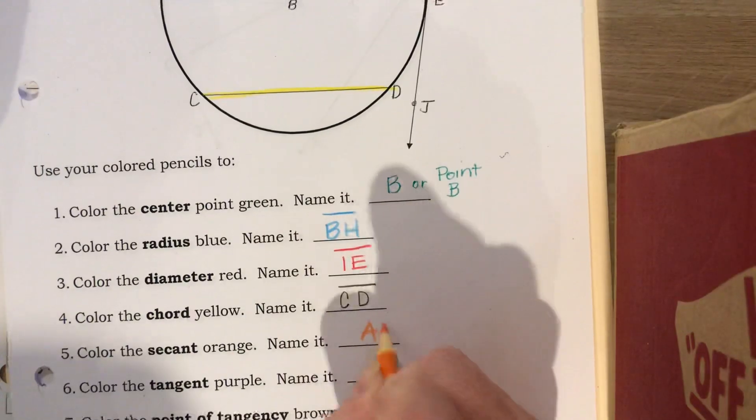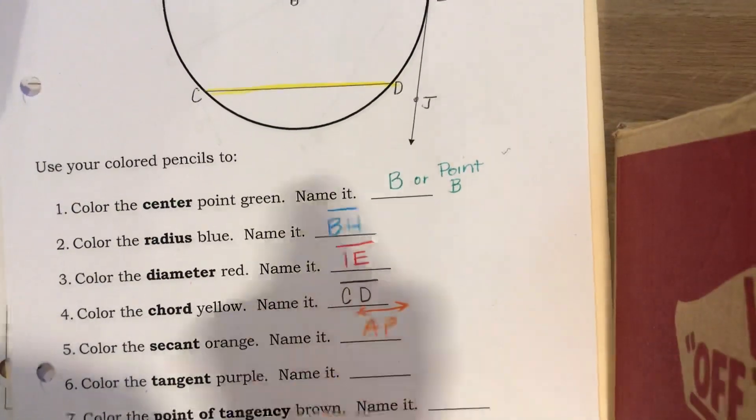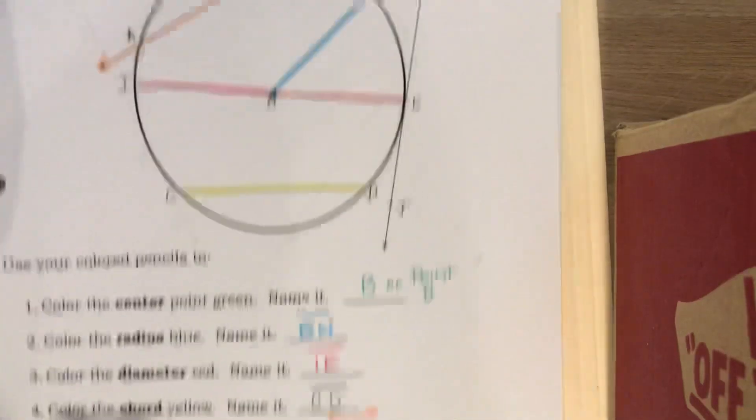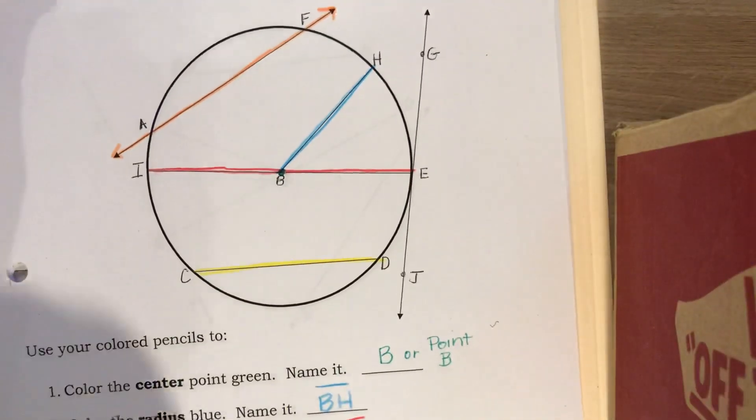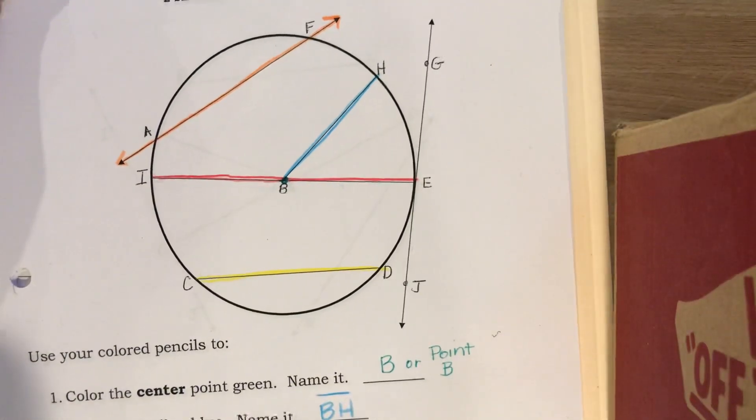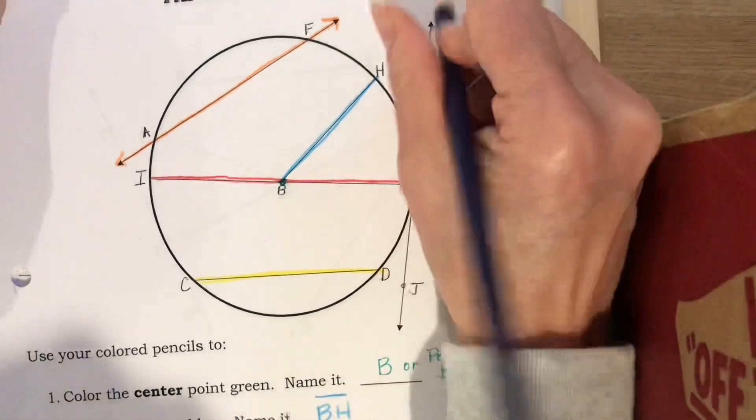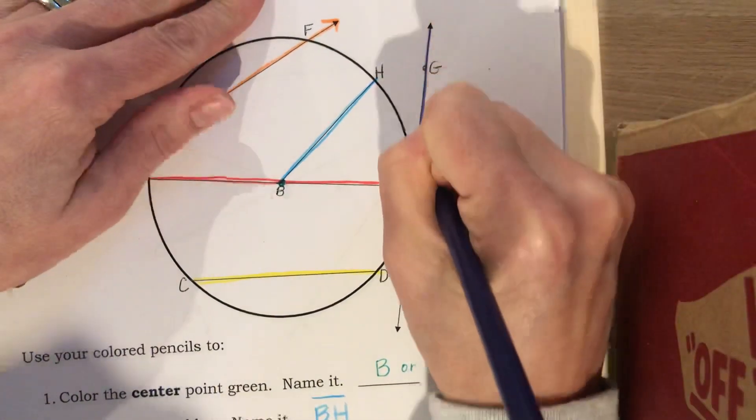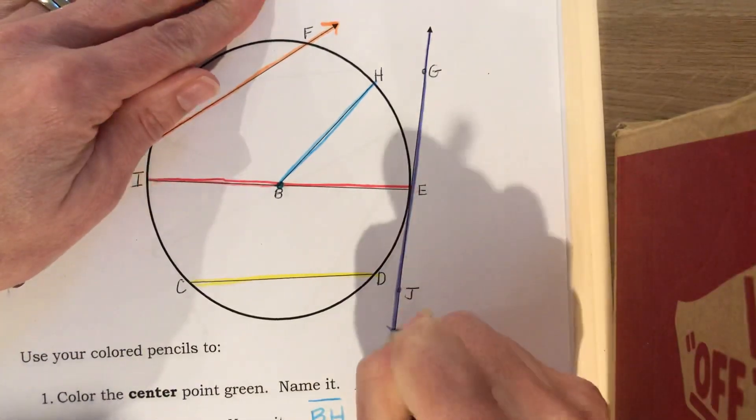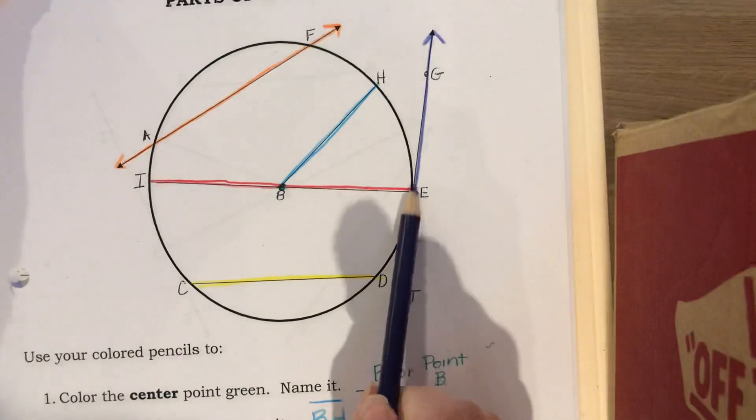Now color the tangent purple. Well, only one thing left and we know that a tangent is a line that is outside of the circle but it touches the circle once. GJ looks like a tangent to me, touches the circle once. GJ with a line above it.